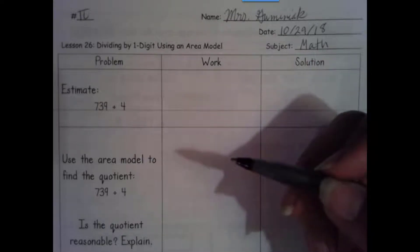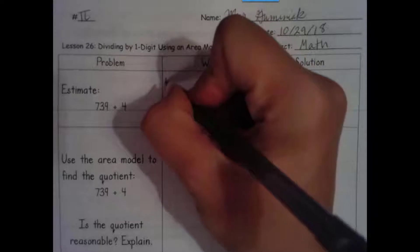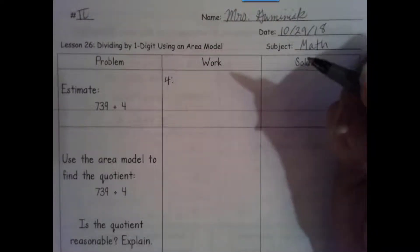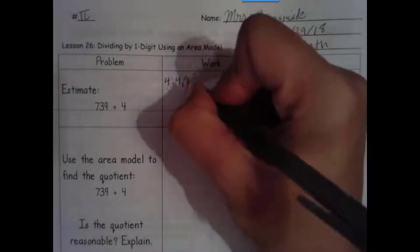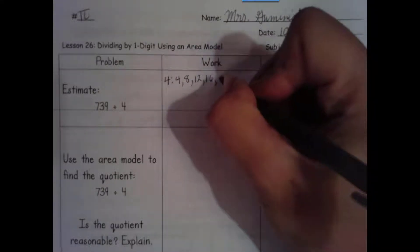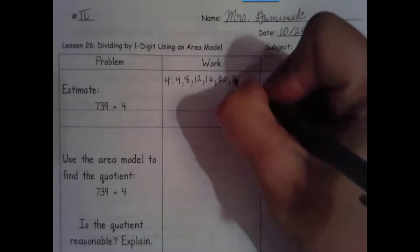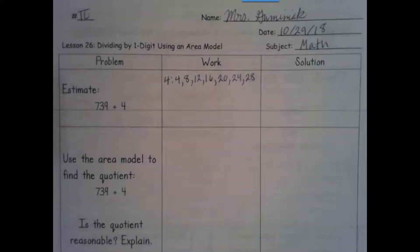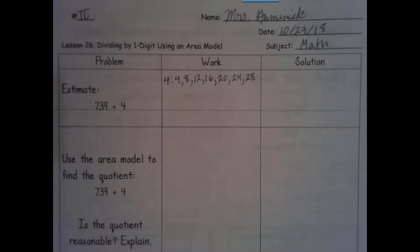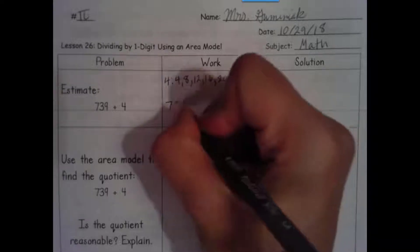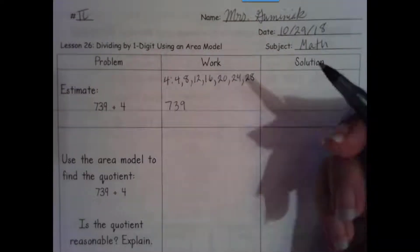We are doing division with our area model, but first we're asked to estimate. Estimating for division is different than anything else — we're not rounding. What we need to do is find a compatible number. We do that by listing our multiples of our divisor: 4, 8, 12, 16, 20, 24, 28.